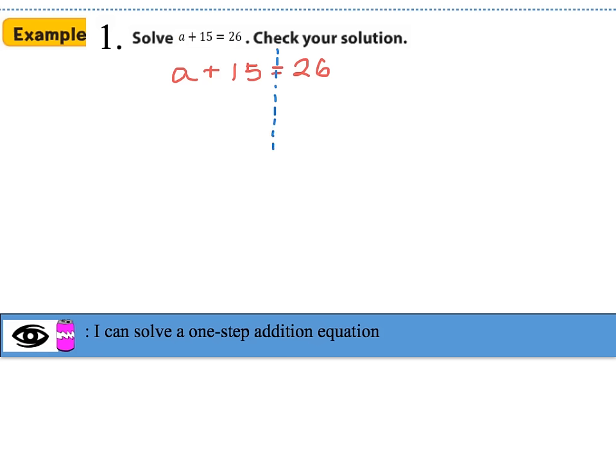Now we have two sides: one side that has a variable and one side that does not. Let's always start on the side that has the variable — the goal is to get the variable a all by itself. Right next to a, I've got a constant of positive 15. In order to isolate a, we need to get rid of positive 15 by doing the opposite of addition and subtracting 15.